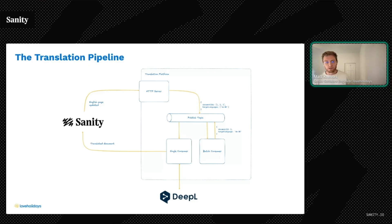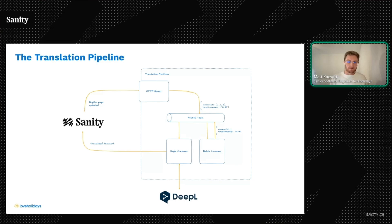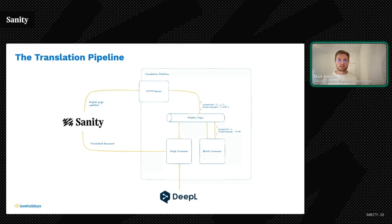Each document takes its own path through our digital conveyor system, ultimately arriving back in Sanity as a translated draft. When reviewing, the content team will fix any issues by either updating the DeepL glossaries — which are essentially mappings of English words or phrases into phrases of our own choosing in the other languages — or by reworking the original language source. Since we currently override the entire translation, the content team isn't able to manually edit the resulting translations, which is something we hope to work on in the coming months.